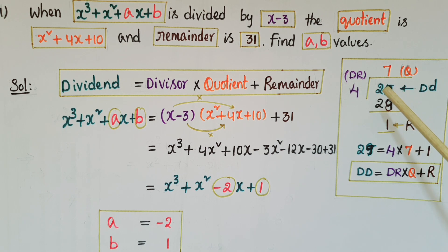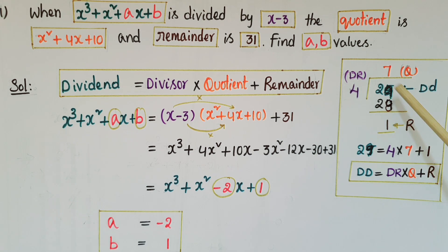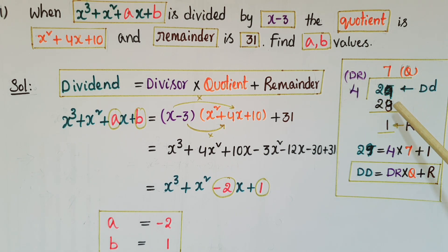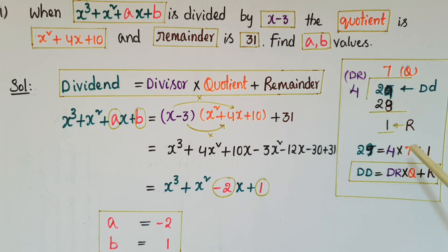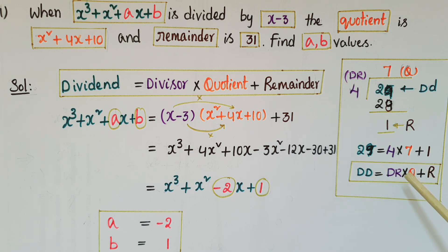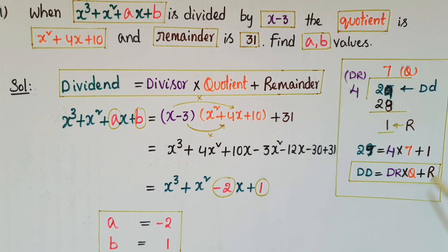We know that generally if we divide 29 by 4, the quotient is 7 and the remainder is 1. So we can write: 29 equals 4 into 7 plus 1. So the dividend equals divisor into quotient plus remainder. We can use this same formula here.